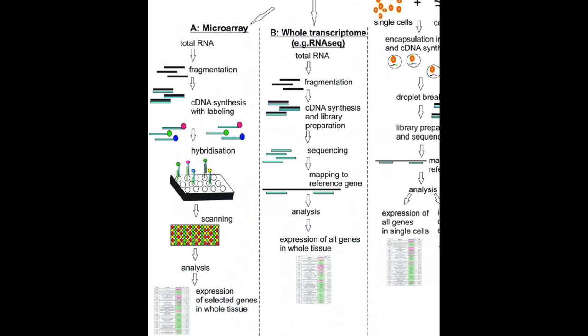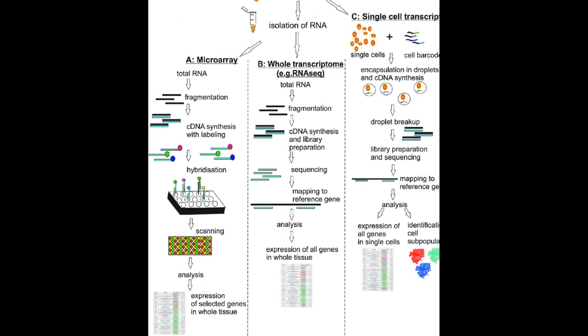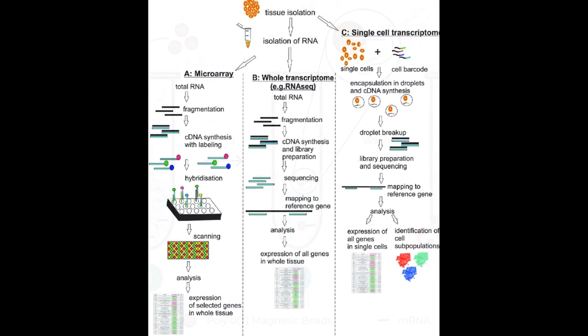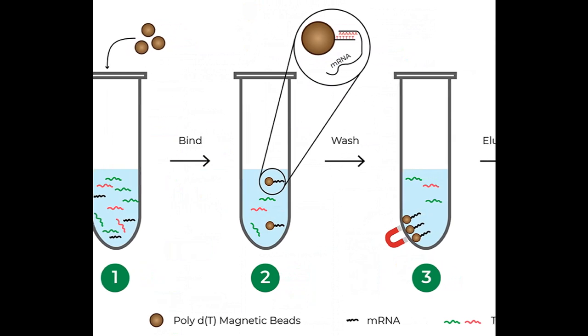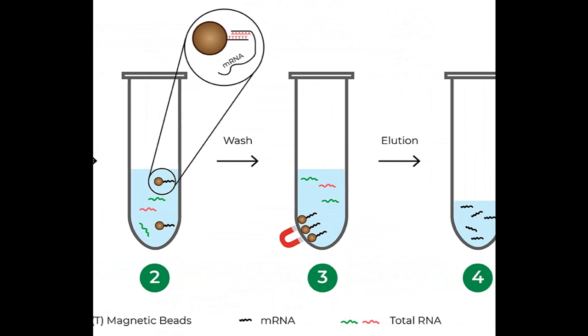Transcriptomics also uses microarrays by hybridizing matching RNA sequences, yet it also utilizes RNA sequencing, which extracts all of the RNA, or total RNA, from the sample, processing it through a variety of steps.